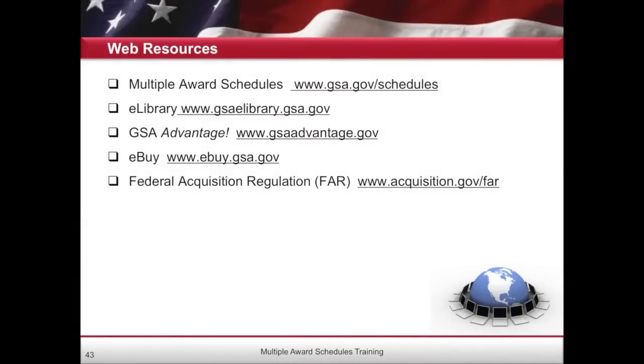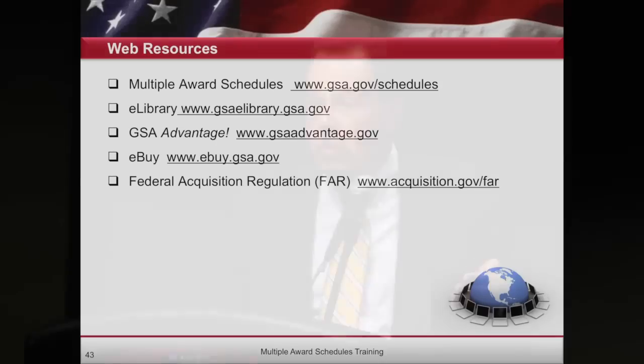There are three e-tools in GSA. There is GSA Advantage, which is an online buying tool. There is GSA e-library, which is a search engine to find the appropriate schedule. As a contractor, you can literally use e-library as a search engine to discover where your schedule or contract is being held, and who your competitors are.